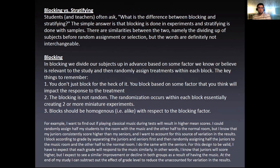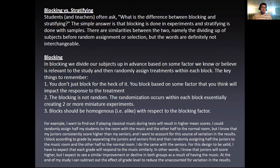For example, if I want to find out if playing classical music during tests will result in higher mean scores, I could randomly assign half my students to the room with music and the other half to the normal room. But if I know that juniors consistently score higher than seniors, I may want to account for that source of variation. So I can block by grade by separating juniors and seniors first, then randomly assigning half the juniors to the music room and the other half to the normal room, and do the same with seniors. For this design to be valid, I have to expect that each grade will respond to the music similarly. At the end, I can subtract out the effect of grade level to reduce the unaccounted-for variation in the results.